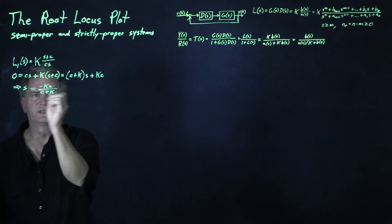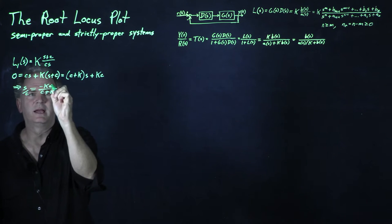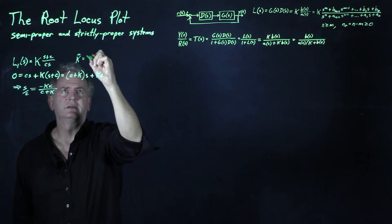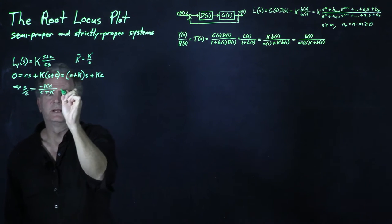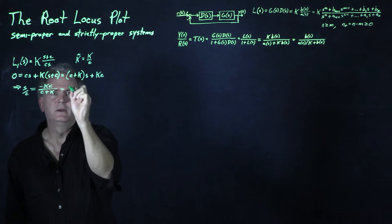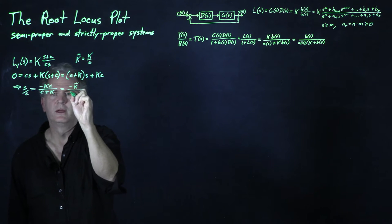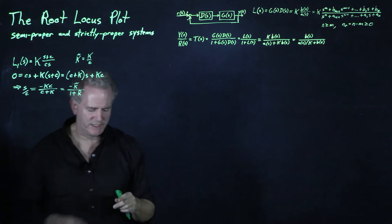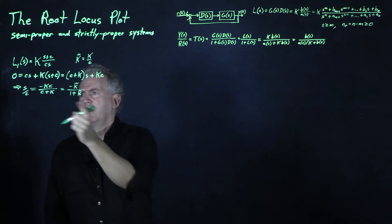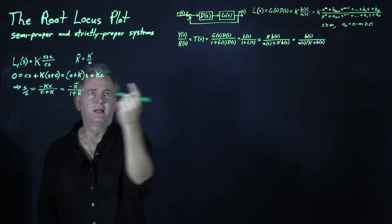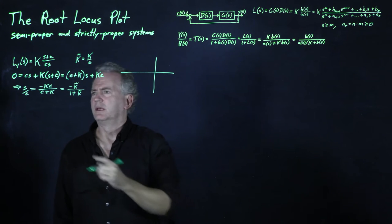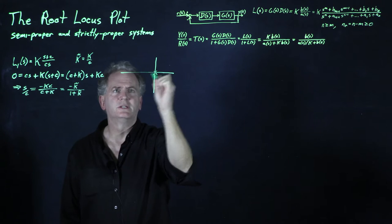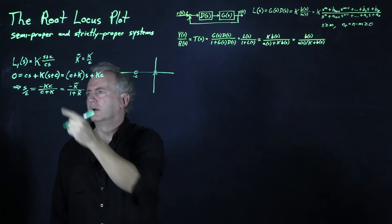It's useful to divide both sides by c, writing s/c = −(K/c)/(1 + K/c). Defining k̃ = K/c, we get s/c = −k̃/(1+k̃). The shape of this locus doesn't actually depend on c — c just scales the space of s. As k̃ goes from small to large, we can plot how the closed-loop pole moves.